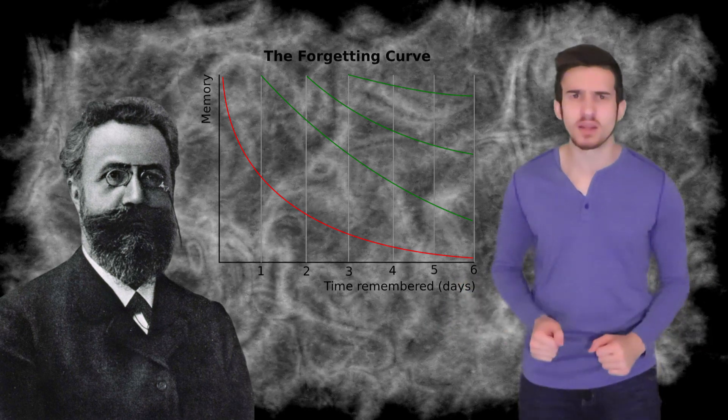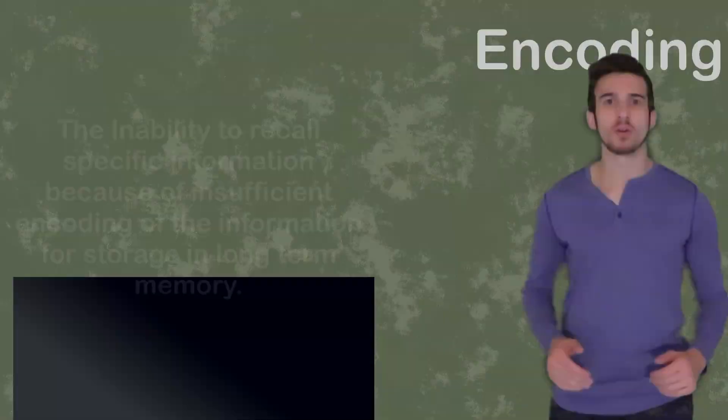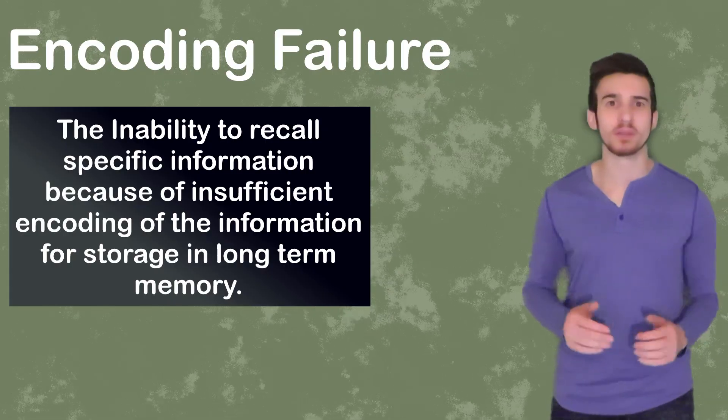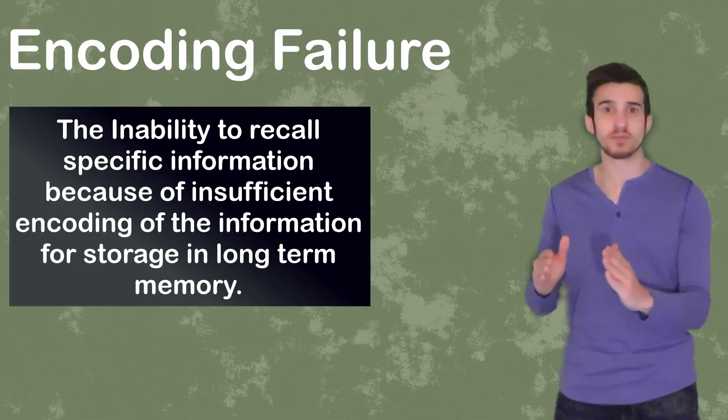Well, why exactly do we forget? We're going to take a look at two theories. Have you ever had someone introduce themselves to you, then only seconds later you just completely forget their name? Why exactly does this happen? Well, chances are you never fully encoded all of this information into your long-term memory in the first place. This is going to be what is known as encoding failure. Encoding failure is just going to be our inability to recall information because we did not encode enough of this information for storage in our long-term memory.